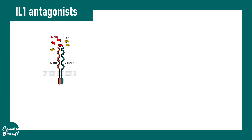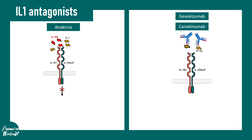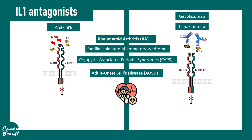Now let's talk about interleukin 1 antagonists. A key antagonist is interleukin 1RA, known clinically as anakinra, which is an inhibitory ligand competing with interleukin 1 for its receptor, attenuating the signaling cascade. Other antibodies such as gevokizumab and canakinumab can bind to interleukin 1 beta, sequestering the ligand and preventing receptor binding. These inhibitory agents have wide clinical applications and have been used to treat rheumatoid arthritis, adult-onset Still's disease, and many other autoimmune conditions.